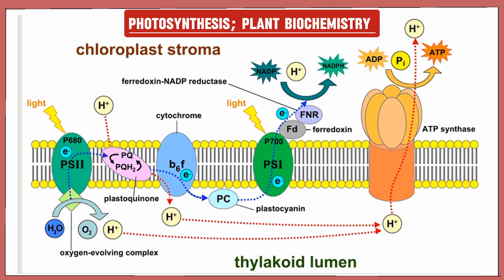Plastoquinone QB picks up the two excited electrons from the reaction center of chlorophyll in Photosystem II, along with two protons from the stroma, and transports them to cytochrome b6f. Plastoquinone QB passes the electrons to the complex and releases the protons into the lumen. Cytochrome b6f then further adds two protons into the lumen.